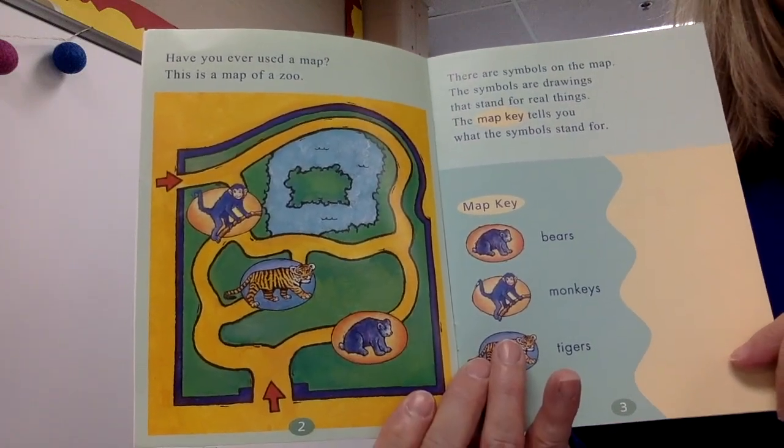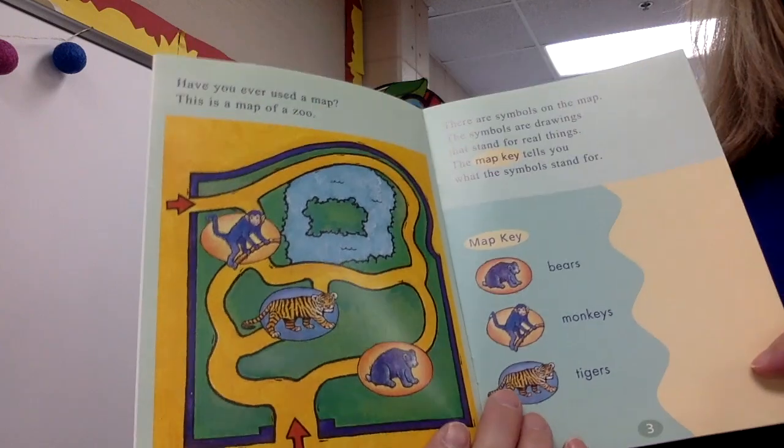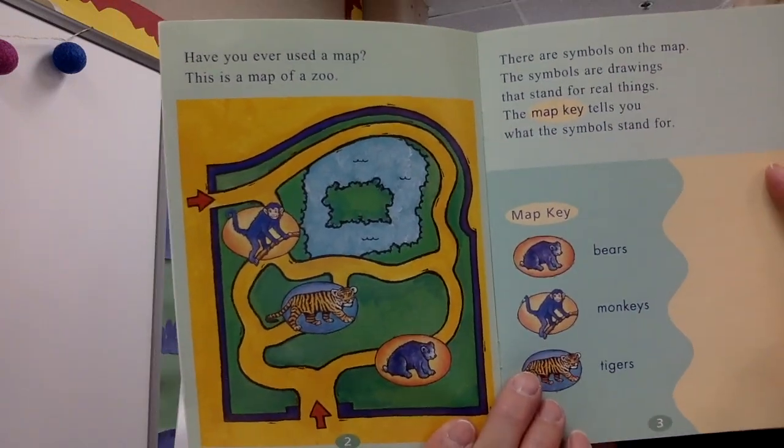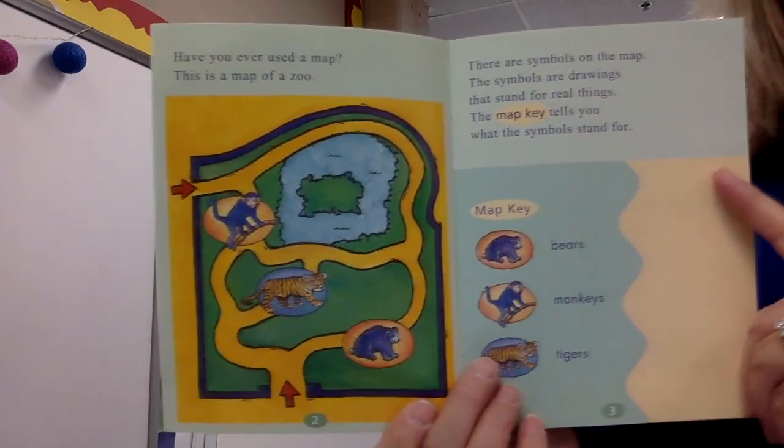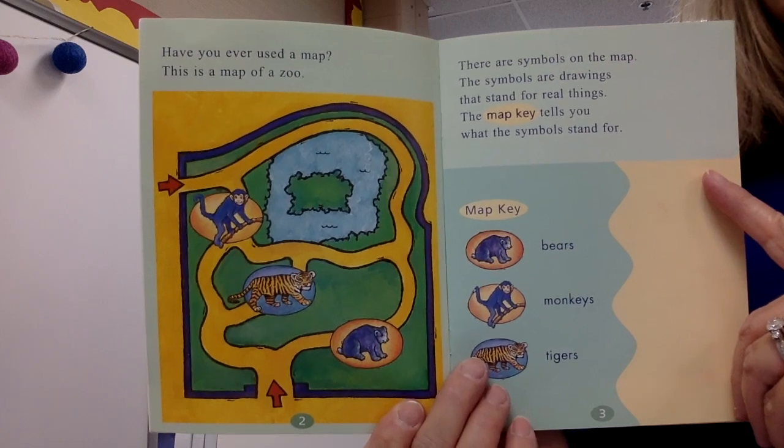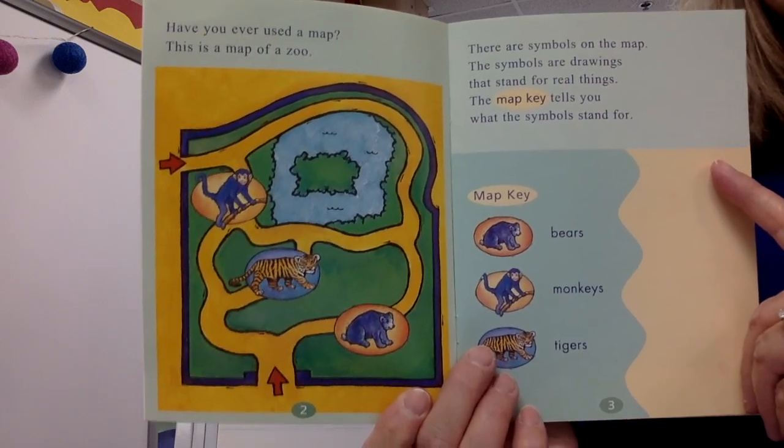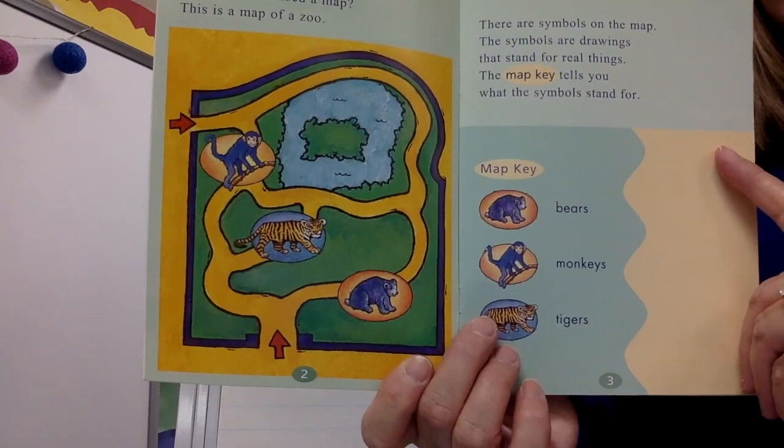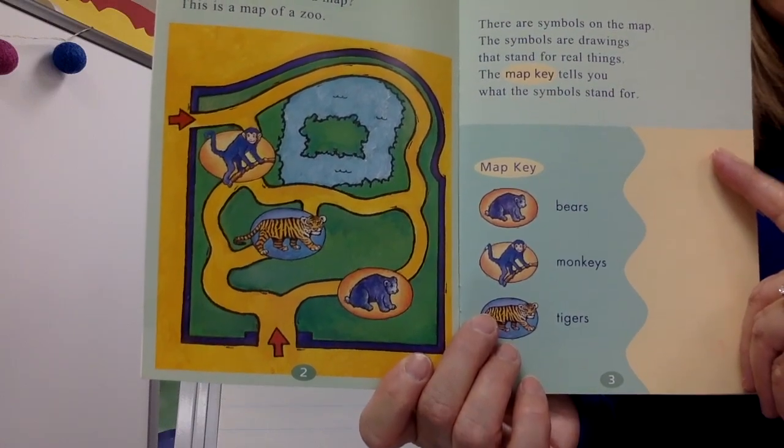Have you ever used a map? This is a map of a zoo. There are symbols on the map. The symbols are drawings that stand for real things. The map key tells you what the symbols stand for. Look at the map key. You have bears, monkeys, and tigers.